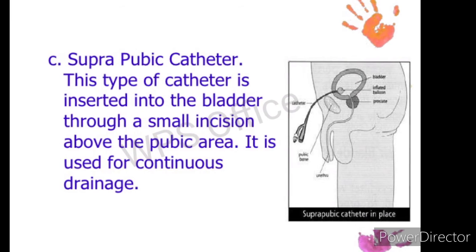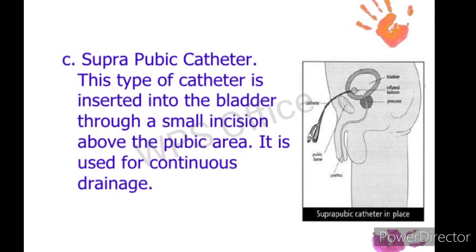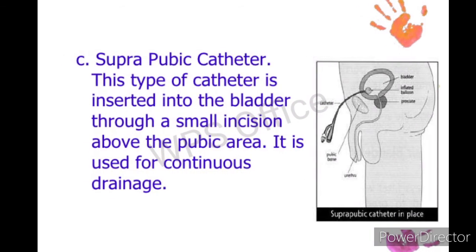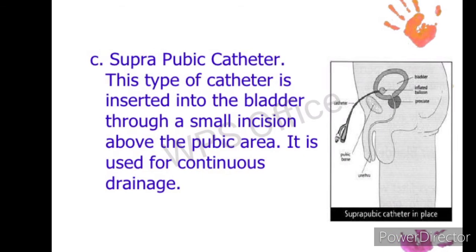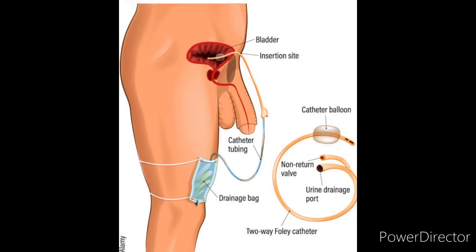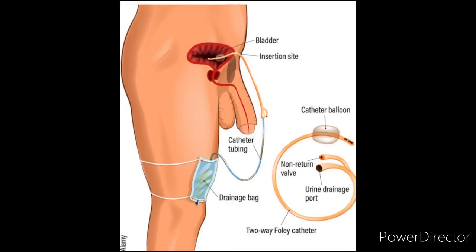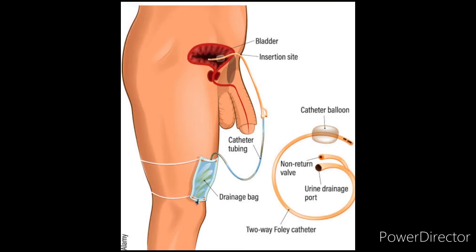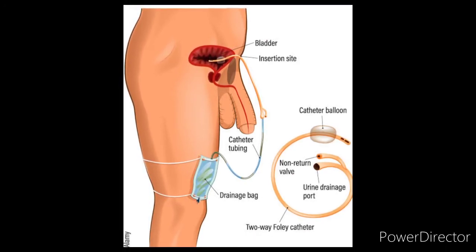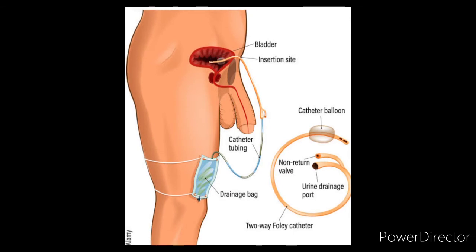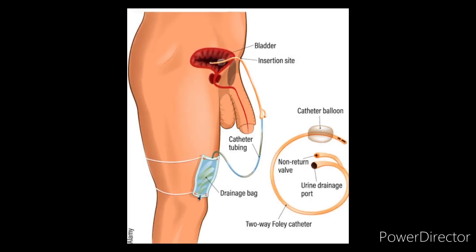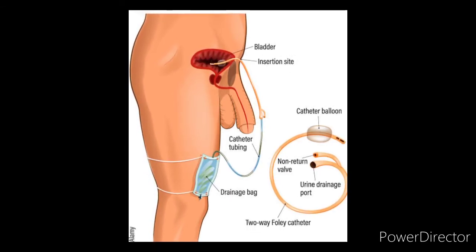The third type is the suprapubic catheter. This type of catheter is inserted into the bladder through a small incision — a small cut made above the pubic area. Then the catheter is inserted there. It is used for continuous drainage.